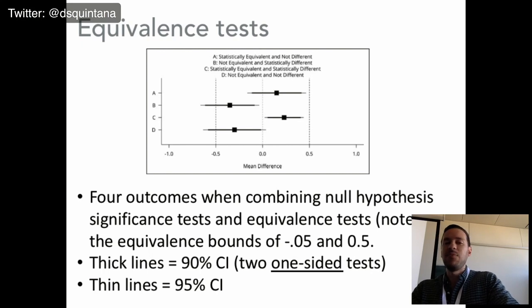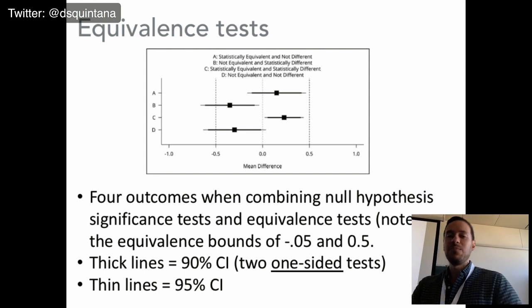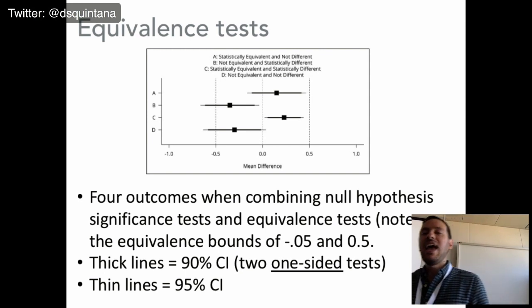Outcome D tends to happen when you have smaller sample sizes. So, those are the four potential outcomes.